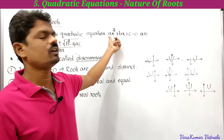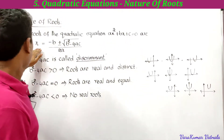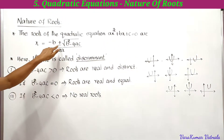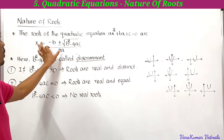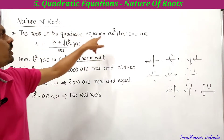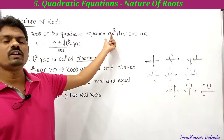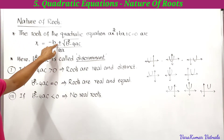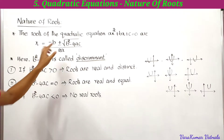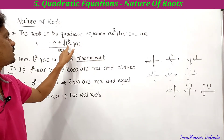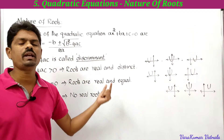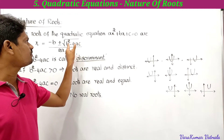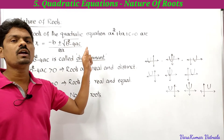For the quadratic equation ax² + bx + c = 0 (where a ≠ 0), the roots are given by x = (-b ± √(b²-4ac)) / 2a. These two are the roots. The term b²-4ac inside the square root is called the discriminant.